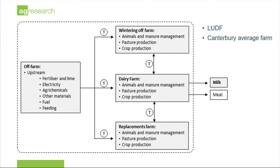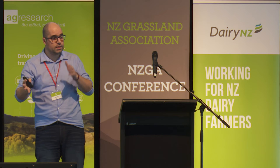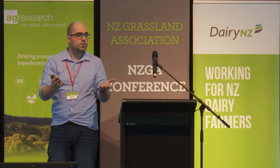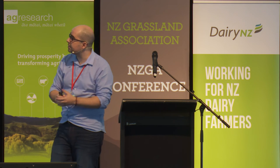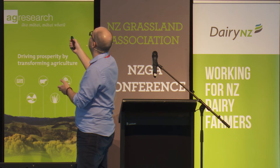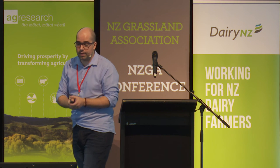We also have to consider that the wintering-off process and the replacements being bought for your farm are also part of the life cycle, even though they are not usually on the same farm. At the end, we allocate emissions since the dairy farm produces both meat and milk, allocating emissions between these two co-products. Again, this is a comparison between Lincoln University Dairy Farm and the Canterbury average.